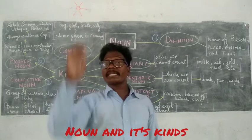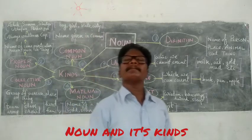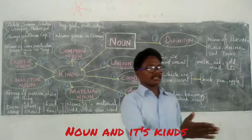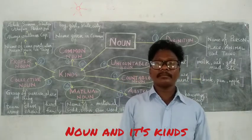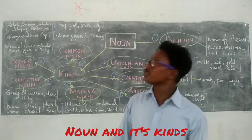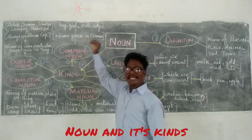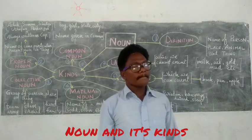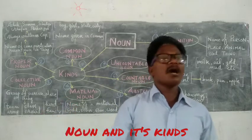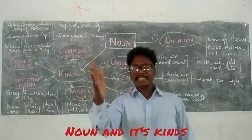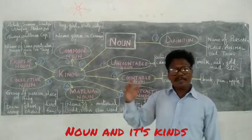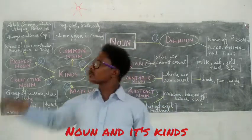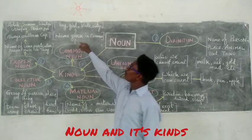Can you name some states? Jharkhand, Odisha, Bihar, West Bengal. What is common among them? State. So state is a common name. Can you name some cities? Ranchi, Kolkata, Mumbai, Delhi, Chennai. What is common among them? City, because all are cities. So these are common nouns.